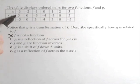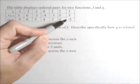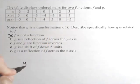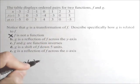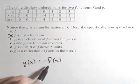Now, if we look at the relationship of what's happening, notice that the sign is changing on all the outputs of f. So that means g of x is equal to a negative on the outside of f of x, because that would change the sign on all the outputs.